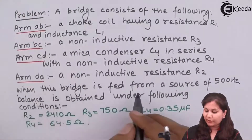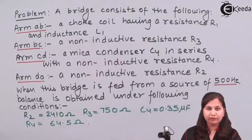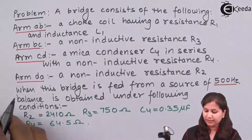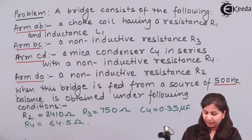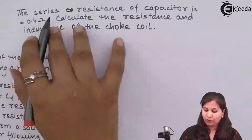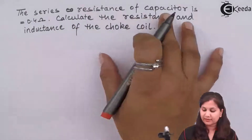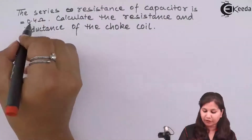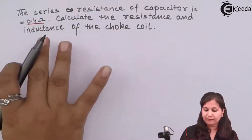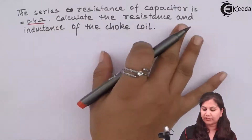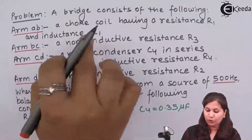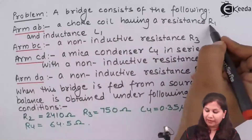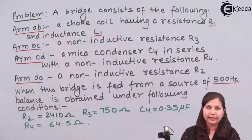When this bridge is fed from a source of frequency 500 hertz, balance is obtained under the following conditions: R2, R3, C4, R4, and the value of the series resistance of the capacitor are given to us. Using this information we have to find out the resistance and inductance of the choke coil — that is, the values of R1 and L1.